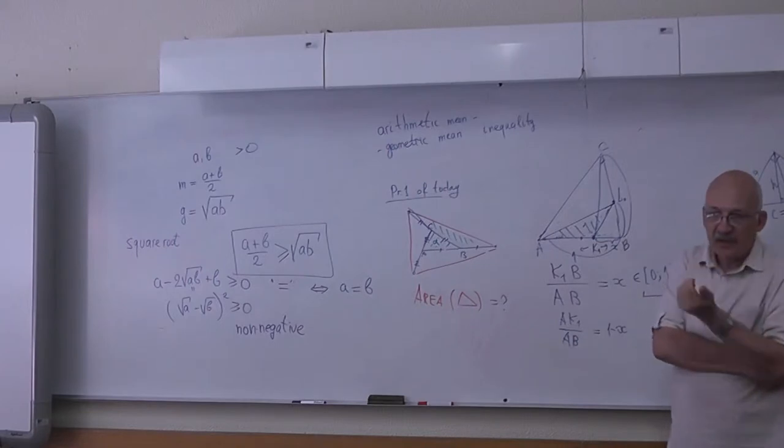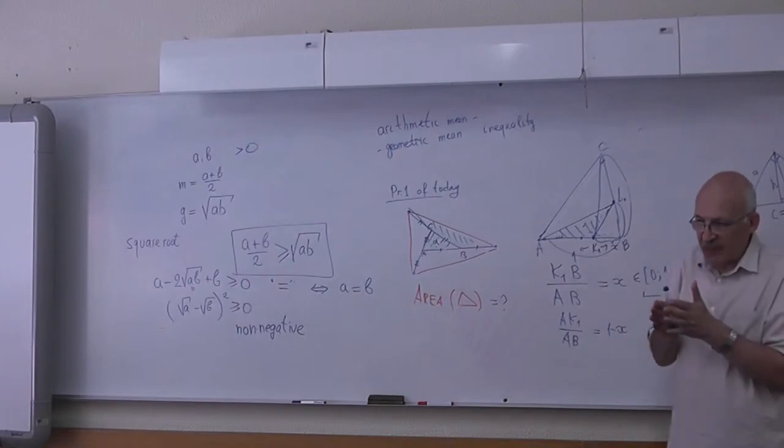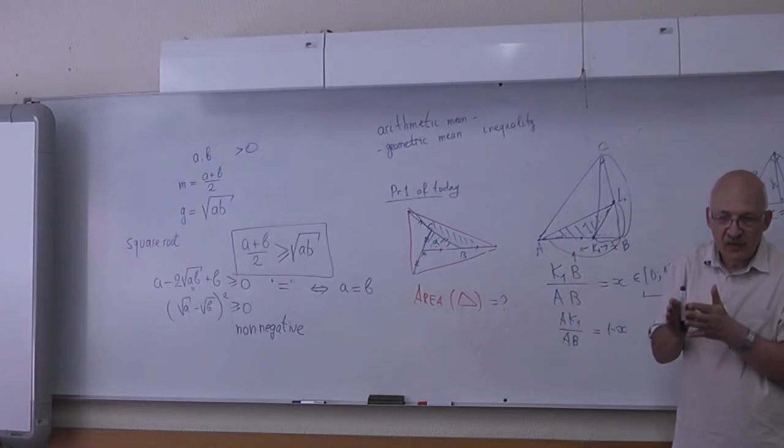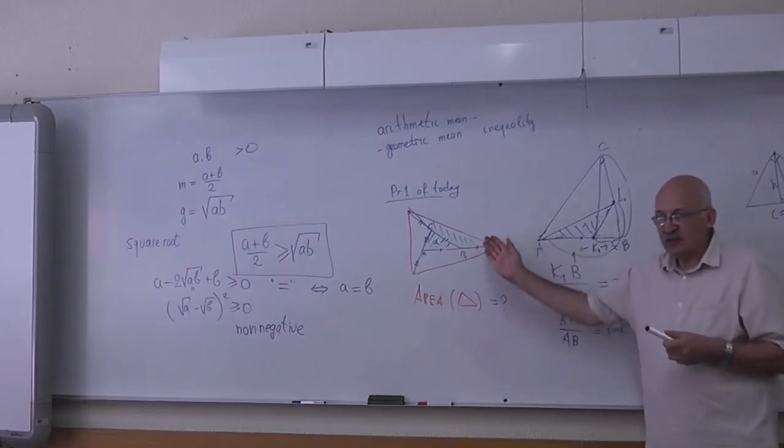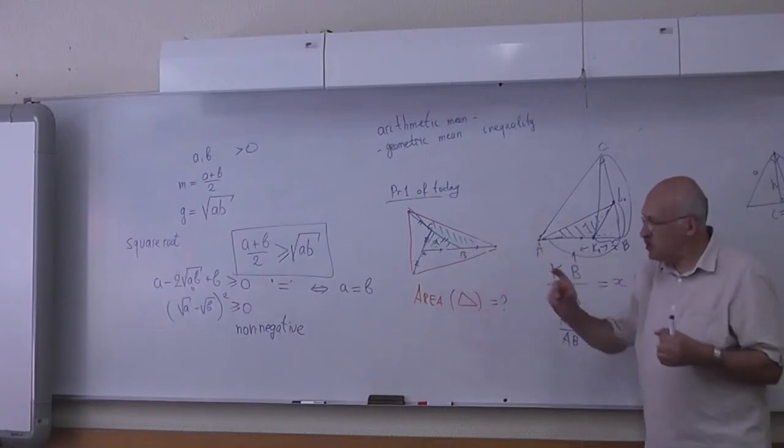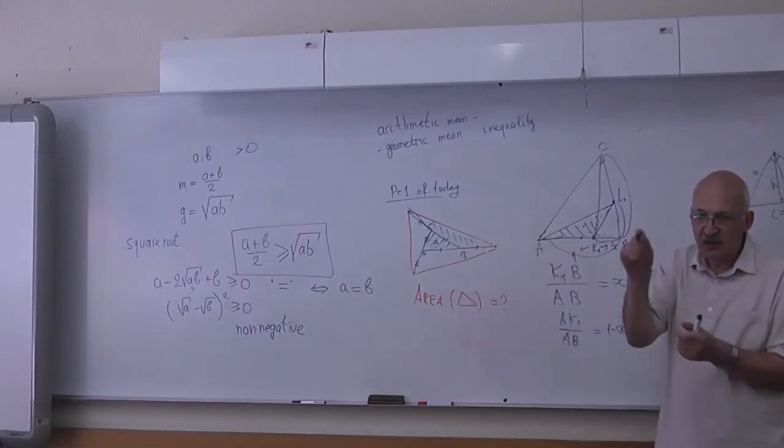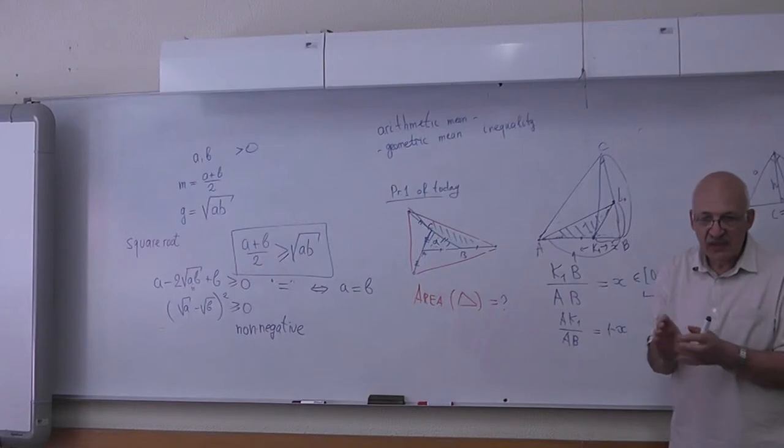Maybe it would help if we use some intermediate triangle which is easy to compare with this one and with this one. Because these two triangles, they don't have a common side. But we can find an intermediate triangle.